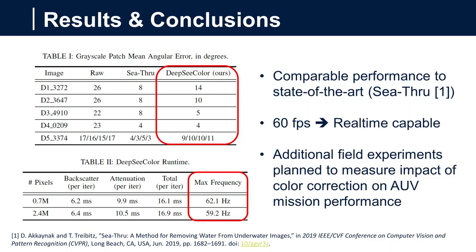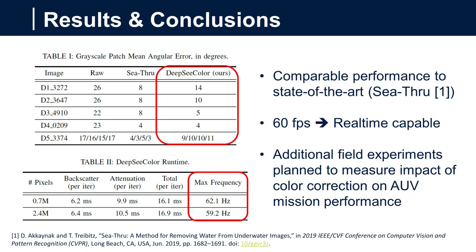Compared to the see-through algorithm, deep sea color achieves qualitatively and quantitatively similar results, but is capable of running at much higher frame rates, making it better suited for real-time use. In upcoming field experiments, we plan to measure the impact of color correction on AUV performance in more sophisticated autonomous tasks like target tracking.